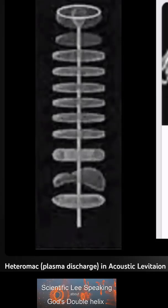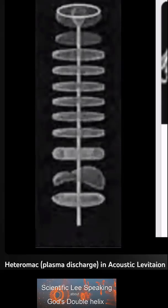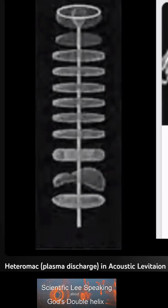A heteromach is a plasma discharge instability. Heteromachs can include filamentary, cellular, and bubble-like clusters. A heteromach is produced by a vertical vortex to a rollover halo wave, which is a double helix or a boris.